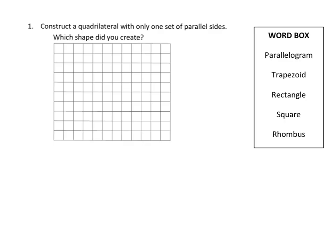Let's put this into some practice. It says construct a quadrilateral with only one set of parallel sides. I'm going to draw a line, and then draw another length parallel but not quite as long, and put it right here. When I connect the vertices, I have a quadrilateral with only one pair of parallel sides. What shape did I create? I created a trapezoid.